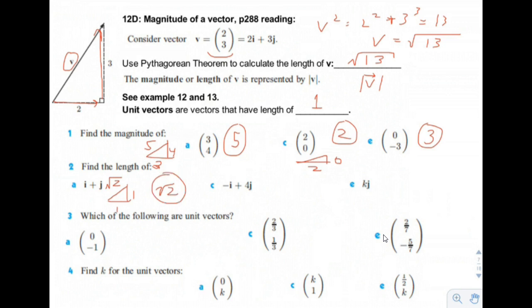For negative i plus 4j, it would look kind of like this: negative 1 plus 4. So this would be 16 plus 1, and the hypotenuse would be the square root of 17. For kj, since there's no i component, the length of this vector would just be k.